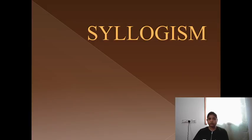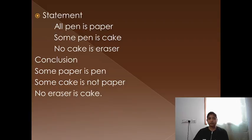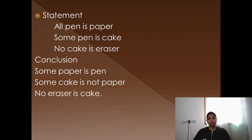Before that, we will see what syllogism actually is. It has a statement, which is the question. For example: all pen is paper, some pen is cake, no cake is eraser. Then there will be a conclusion, and based on the conclusion we have to find out whether it follows or not. We have to be careful about the main question, which asks whether the conclusion follows, doesn't follow, or whether it is a possibility-type question. We then answer based on the options given.